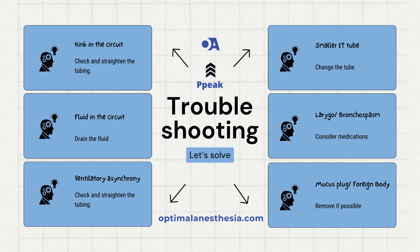Laryngospasm or bronchospasm can narrow the airways, much like squeezing a stress ball too hard. Solution: consider using medications like steroids or epinephrine to relax and open the airways. Mucus plugging is another common issue — imagine a blocked drain that needs clearing to restore flow. Solution: clear out the ETT to ensure unobstructed air passage. Lastly, a foreign body might be causing the problem, like a pebble stuck in a hose. Solution: identify and remove the obstruction to restore normal airflow. To sum it up, when you see high peak pressures but normal plateau pressures, think airway resistance.